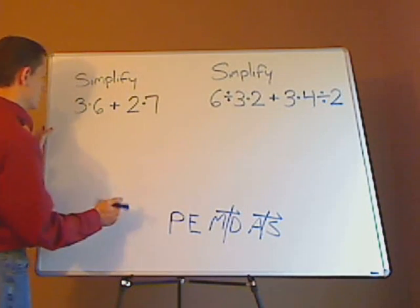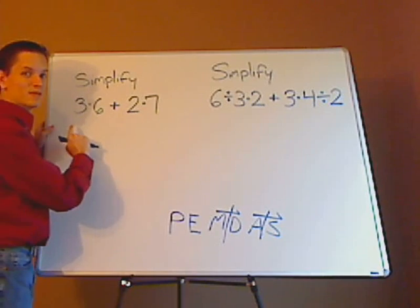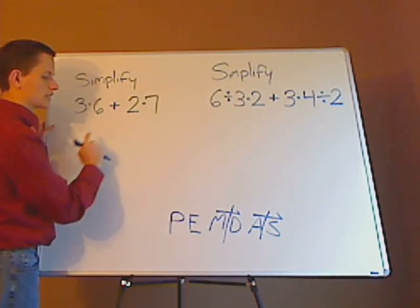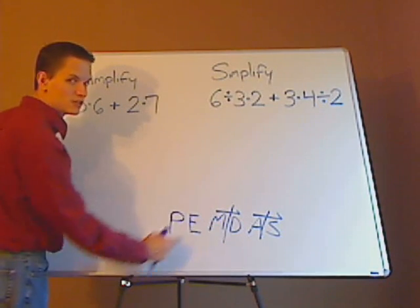So I'll show you what that looks like. So for the first one, there's no parentheses in both of these examples, and there's no exponents. So you can kind of ignore those. Then it's multiplication and division.